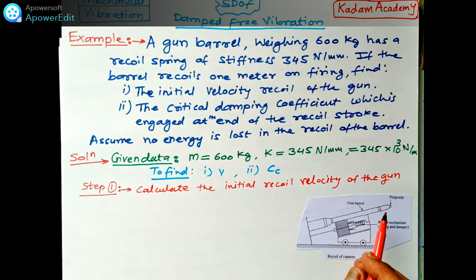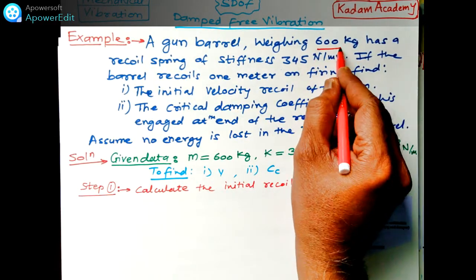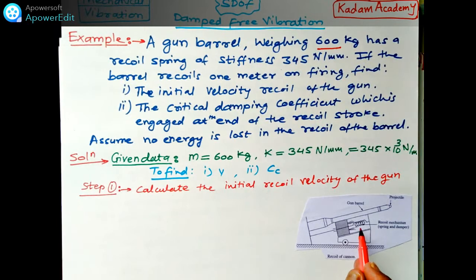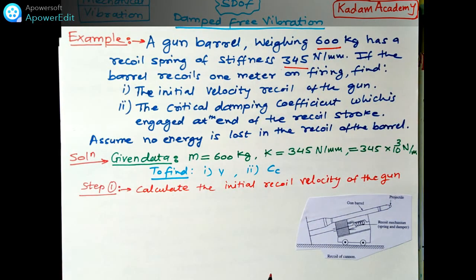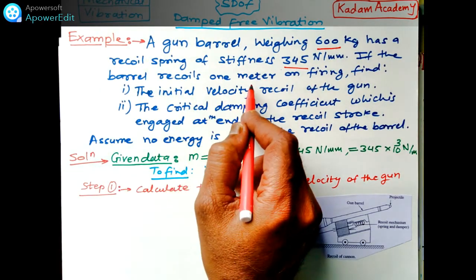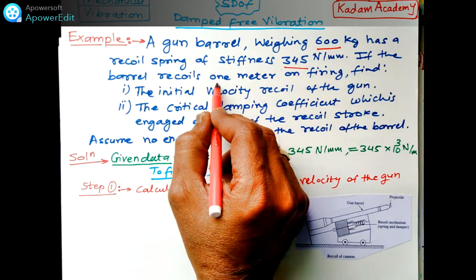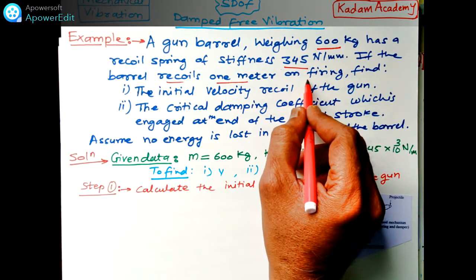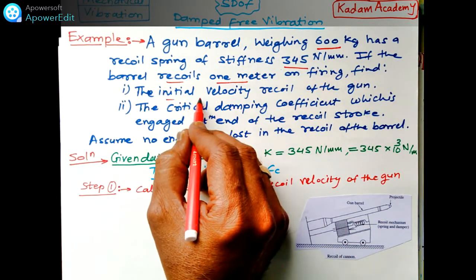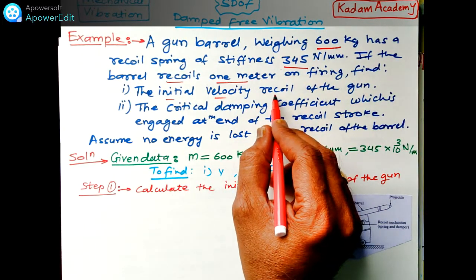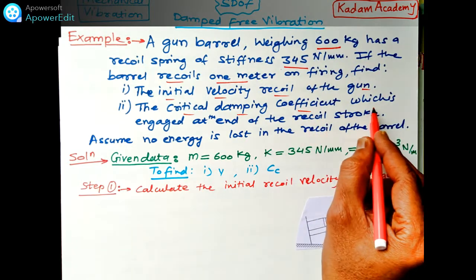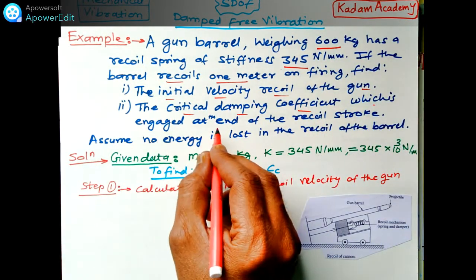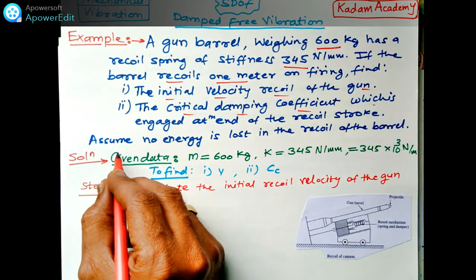The gun barrel weighing 600 kg has a recoil mechanism with a spring and damper. The spring stiffness is 345 newton per millimeter. If the barrel recoils one meter on firing, we need to find: the initial velocity of the recoil, the critical damping coefficient, and the damper engaged at the end of the recoil stroke. Assume no energy is lost in the recoil of the barrel.